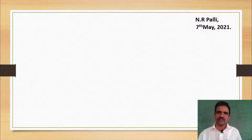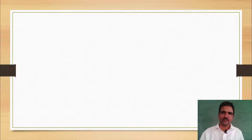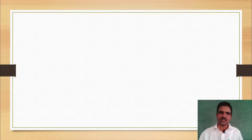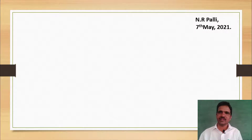Before writing this letter, we take a plain white paper. The white paper has four directions: right side top corner, left side top corner, right side bottom of the page, and left side bottom of the page, and in the middle of the page. First, we have to write the place and date at the right side top corner of the page.